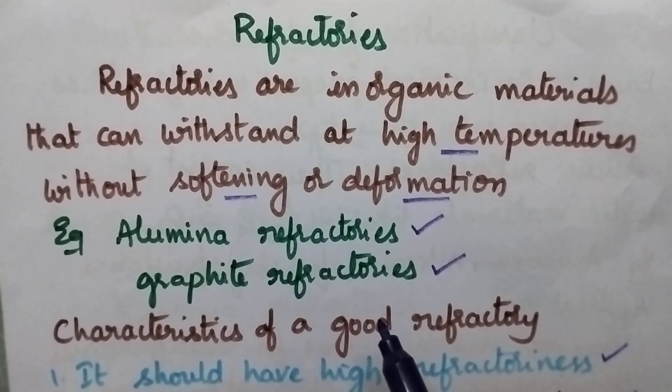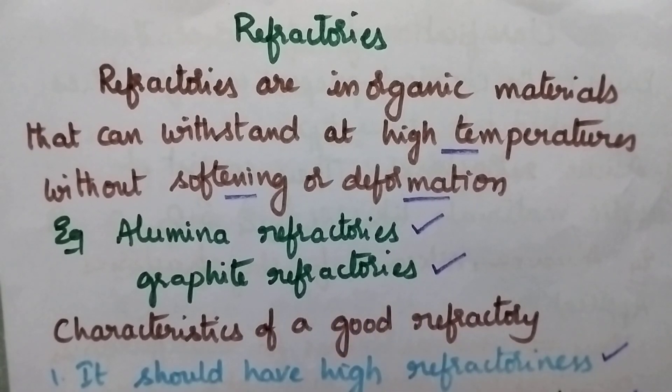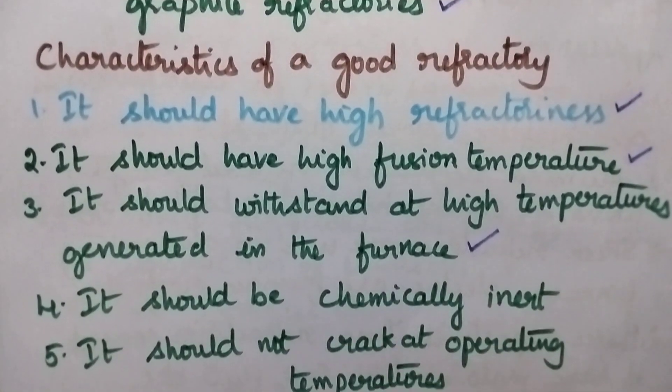Good examples include aluminium refractories, graphite refractories, carburendon refractories. Coming to the characteristics of a good refractory,